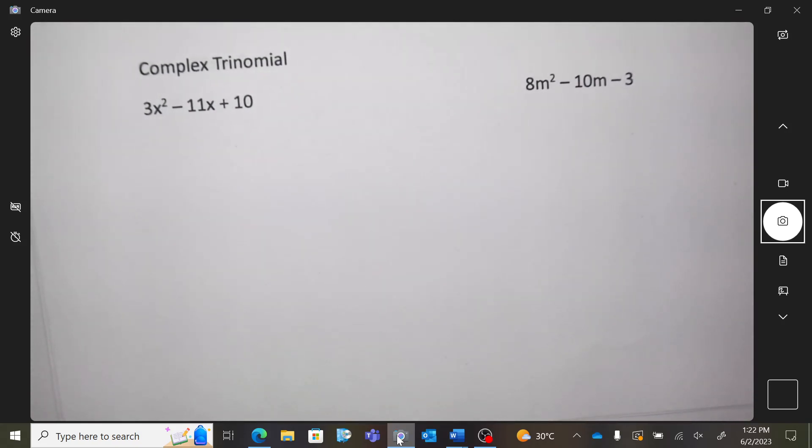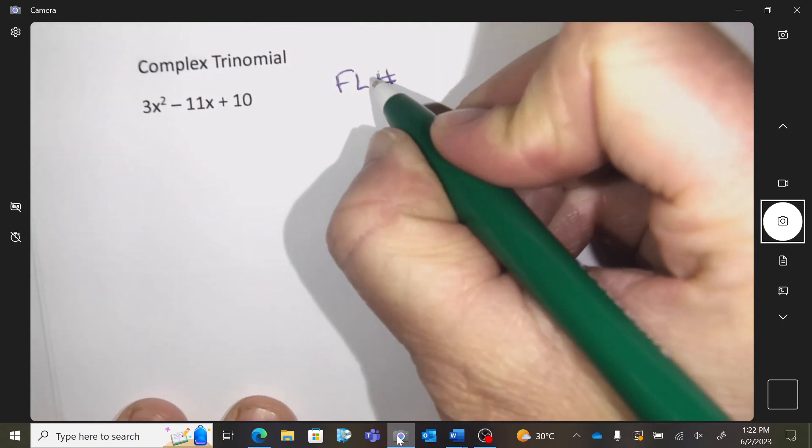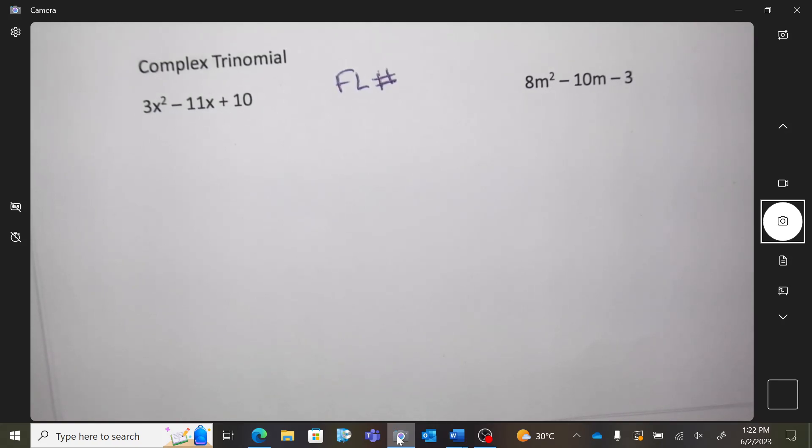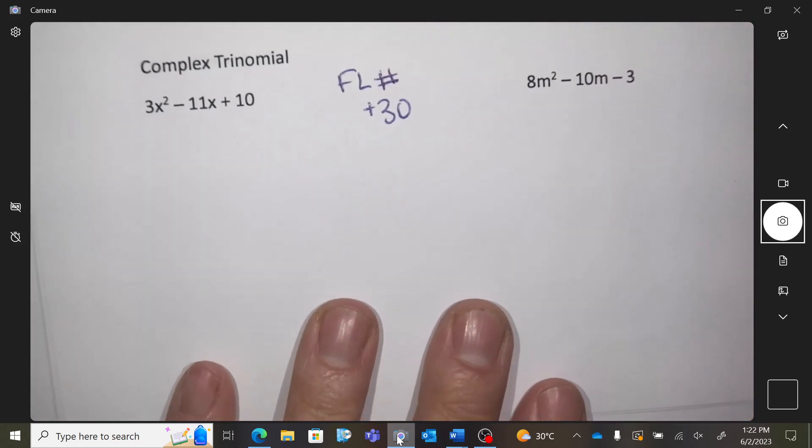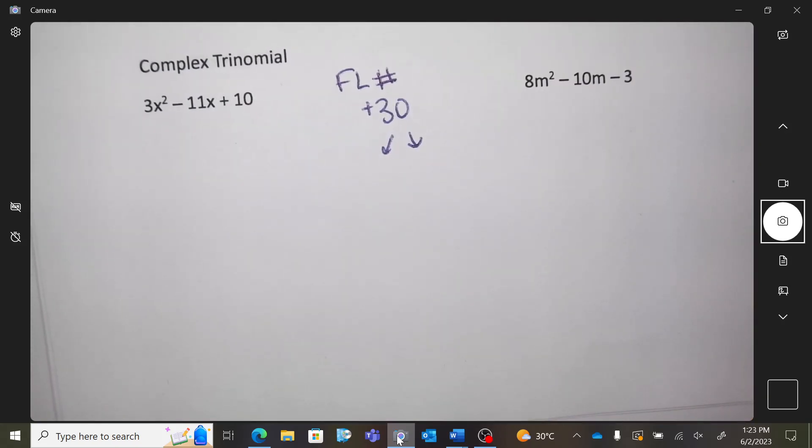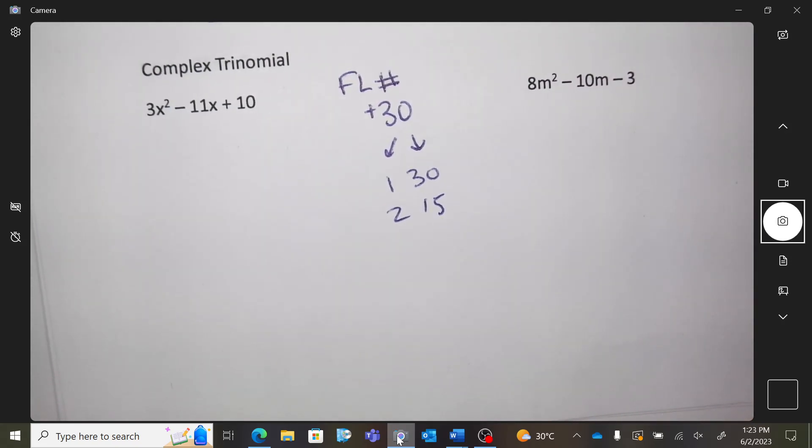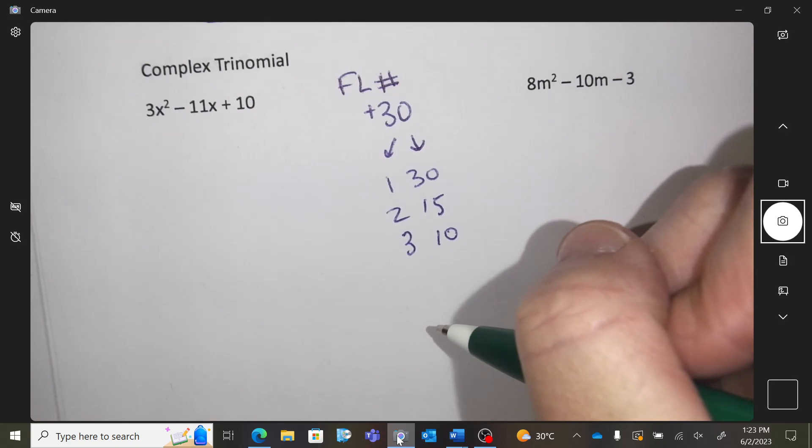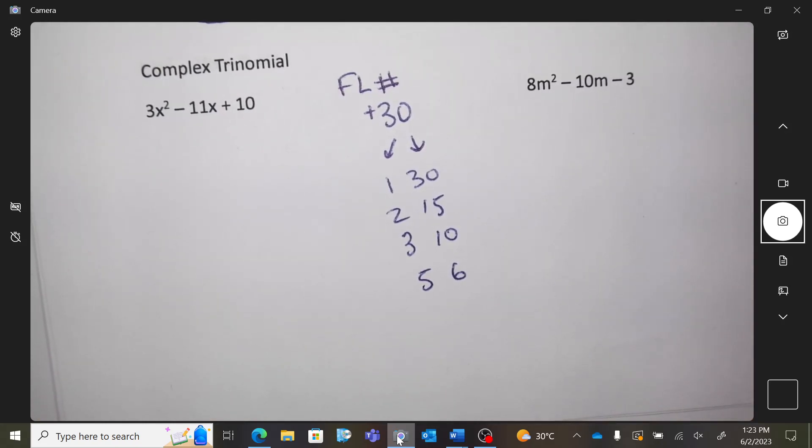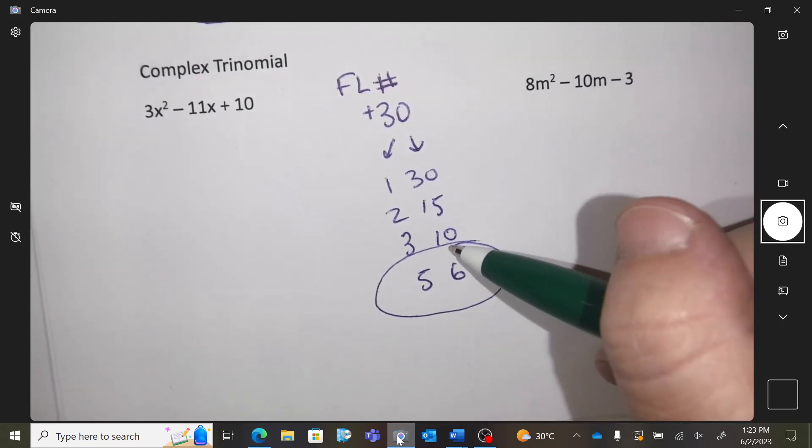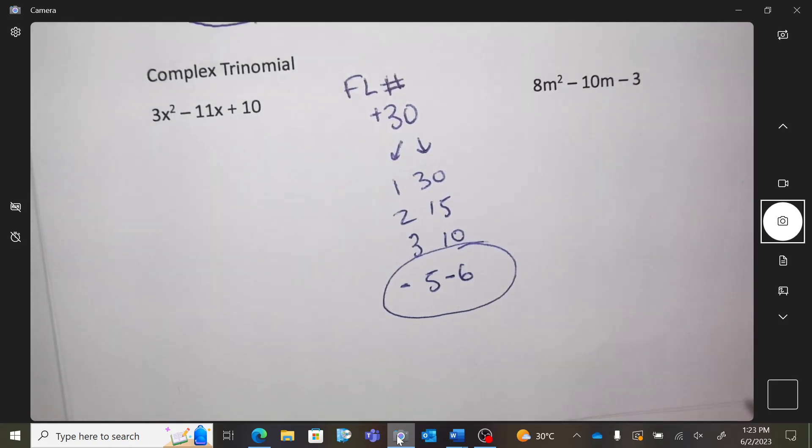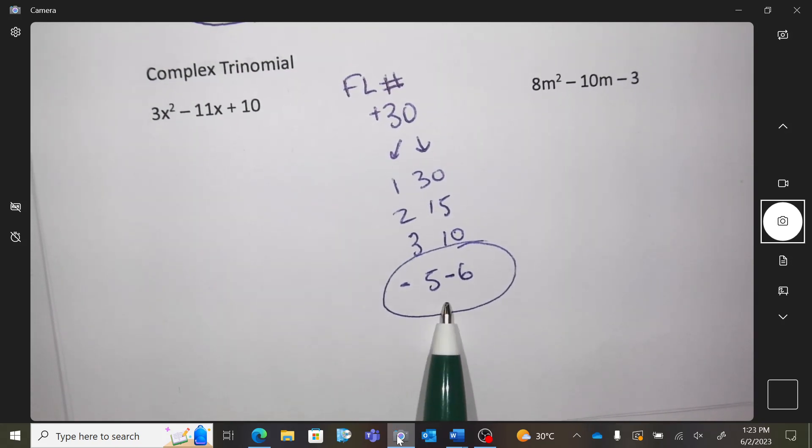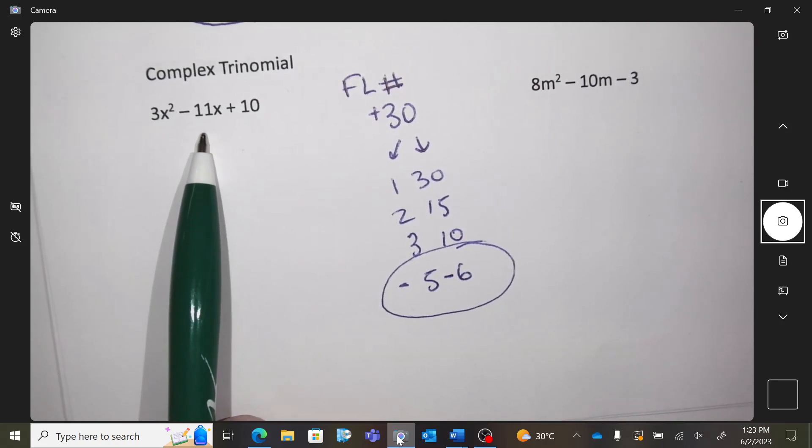And then our last type is the complex trinomial. So this one is a whole ordeal now. So we're going to start with this. What is the flood number? 30. I'm going to go positive 30. I'm going to write that specifically in there. I'm going to list some possible ways to get 30. 1 times 30. 2 times 15. 3 times 10. Is it divisible by 4? No. Is it divisible by 5? Yes. Do any of these get you 11 if you add? 5 and 6. I would need them to be negative negative. Reminding myself it needs to multiply to positive 30 and add to negative 11.